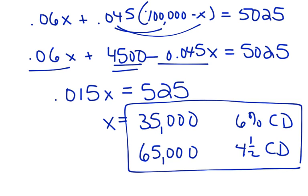And if you're not sure if you did it correctly, take X, plug it back into this problem up here, and see if your final answer isn't 5,025. Or take 6% of this number and take 0.45% of this number and add them and make sure you get 5,025.